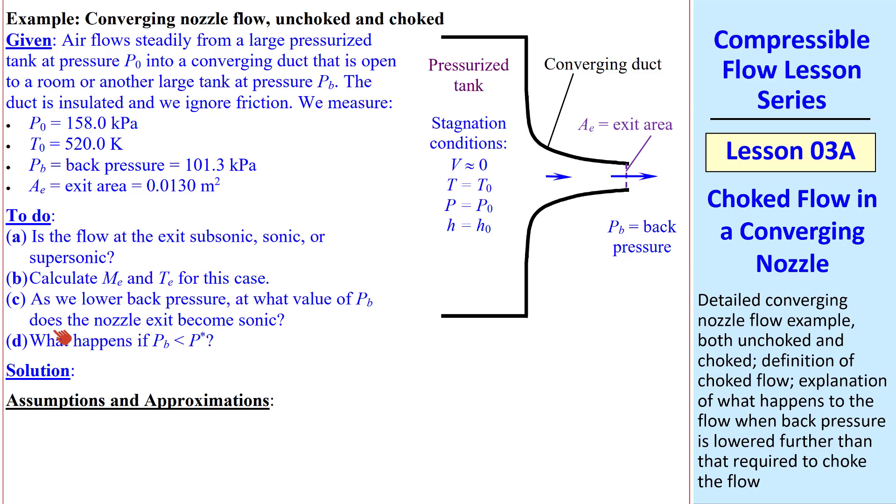We'll do these four parts, but first let's list our assumptions and approximations. The air is approximated as an ideal gas. We'll approximate the flow as adiabatic, since it's well insulated. Since we're ignoring friction and other irreversibilities, we approximate this flow as isentropic. We also make the one-dimensional approximation, namely at any cross-section of the flow, we use capital V as the average speed, and thinking of that V as constant through the duct at this location.